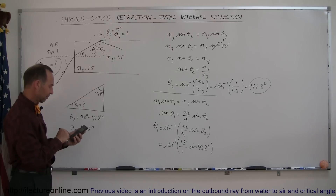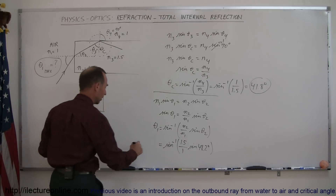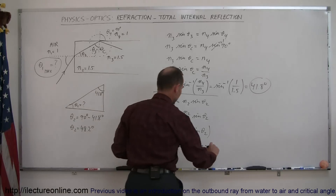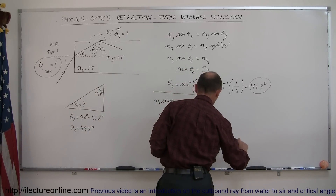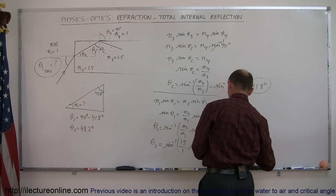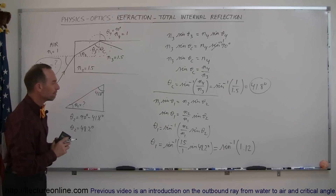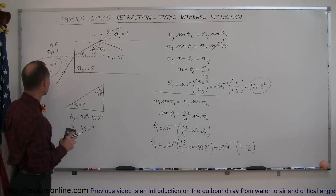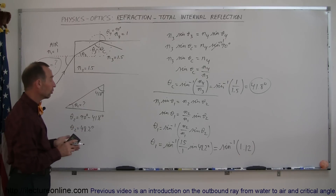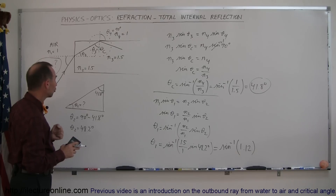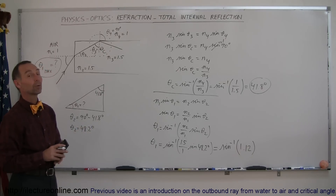Multiplying 1.5 by sine of 48.2 degrees gives us a problem — the quantity inside the arc sine works out to 1.12. We cannot take the arc sine of 1.12, since it exceeds 1. What does that really mean? It means the angle of incidence theta sub 1 has no upper limit — you can make the angle as large as you want. Because no matter how large you make it, theta sub 2 will never be smaller than 48.2 degrees, which means theta sub 3 will never be larger than 41.8 degrees.